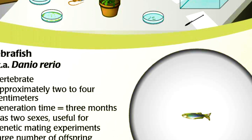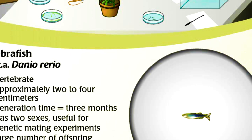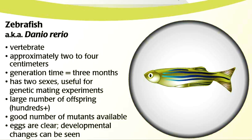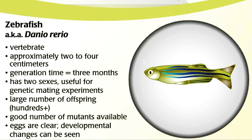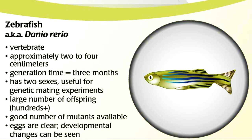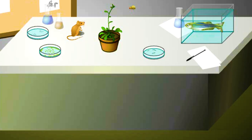Zebrafish: Danio rerio. Vertebrate. Approximately 2 to 4 centimeters. Generation time is 3 months. Has 2 sexes, useful for genetic mating experiments. Large number of offspring, 100 plus. Good number of mutants available. Eggs are clear, so developmental changes can be seen. Genome sequenced.